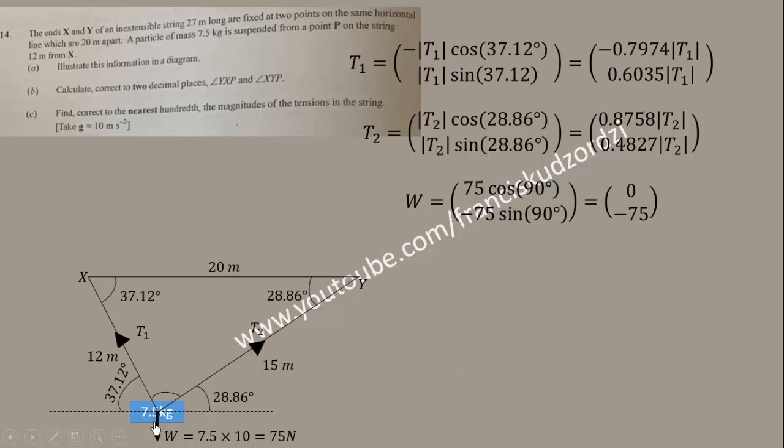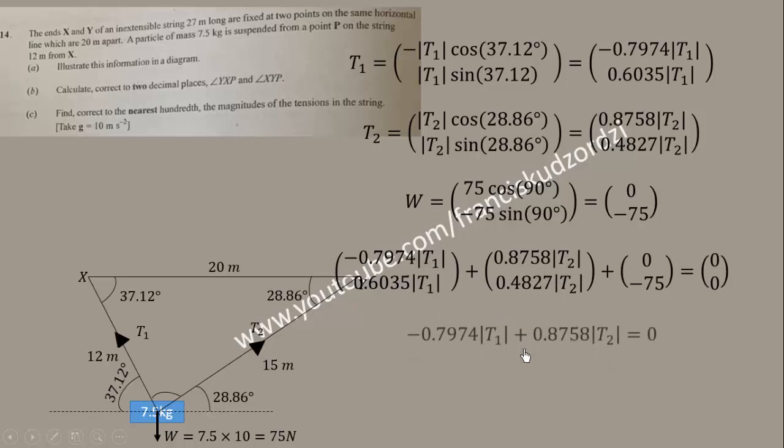The body is now in equilibrium, so if we add all the forces acting on it, we should get zero. This gives us two simultaneous equations in T₁ and T₂. -0.797T₁ + 0.8758T₂ = 0, that is taking the X component. If we take the Y component, we obtain this second equation.